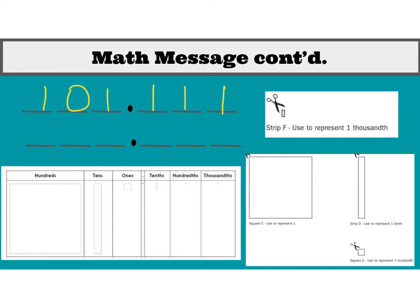So again, that would be one hundred one and — so where we have that decimal point, when we say those out loud, we say the word 'and' instead of saying 'decimal point.' So we need to say it correctly: one hundred one and one hundred eleven thousandths.